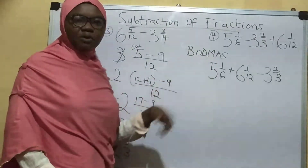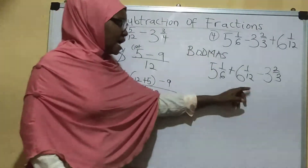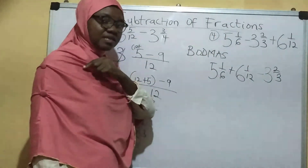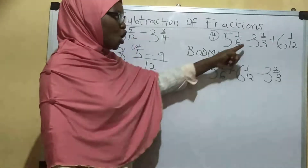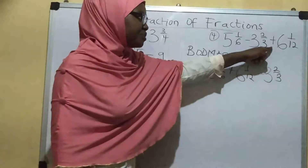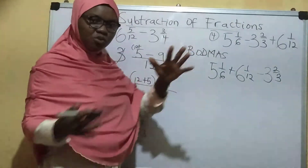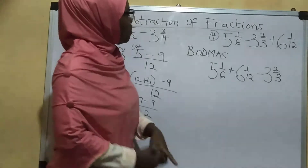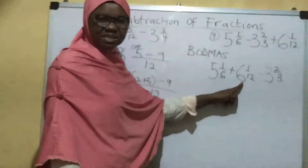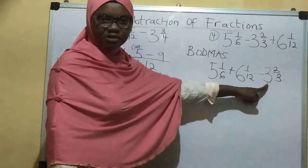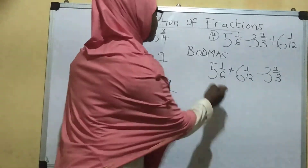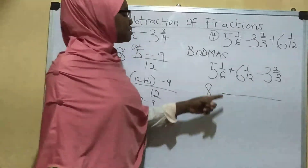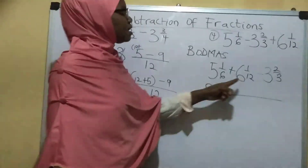Now when you are rearranging, be very careful — this operator belongs to this term, so be careful how you rearrange. Now let's do it one by one: the whole numbers — 5 plus 6 is 11, and 11 minus 3 is 8 as our whole number. The next thing we look at is the denominators: we have 6, and...